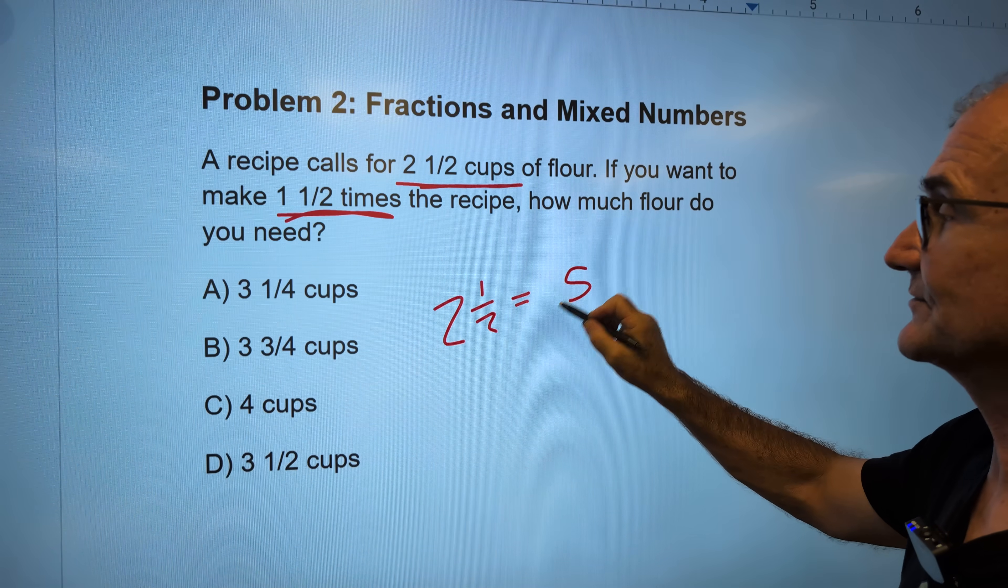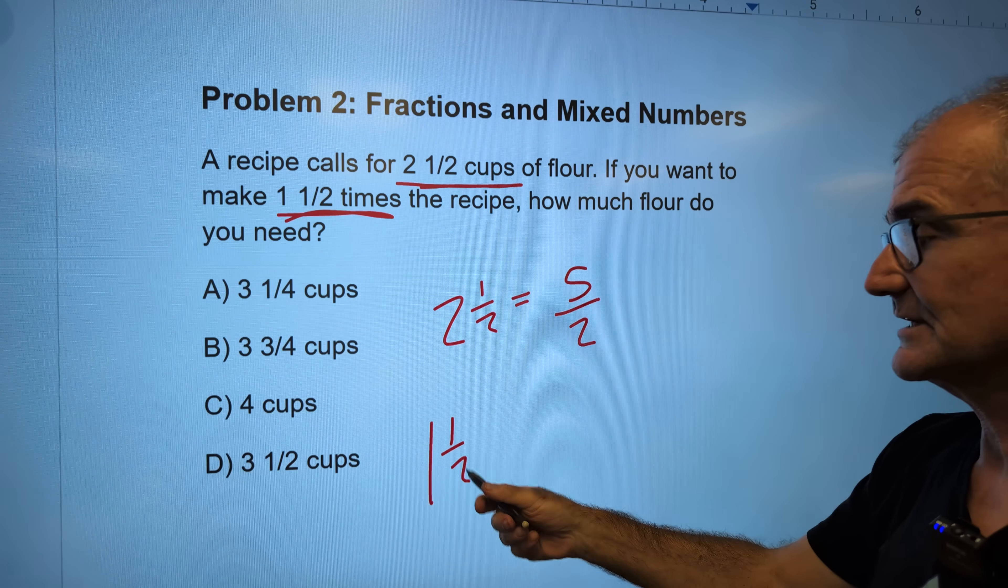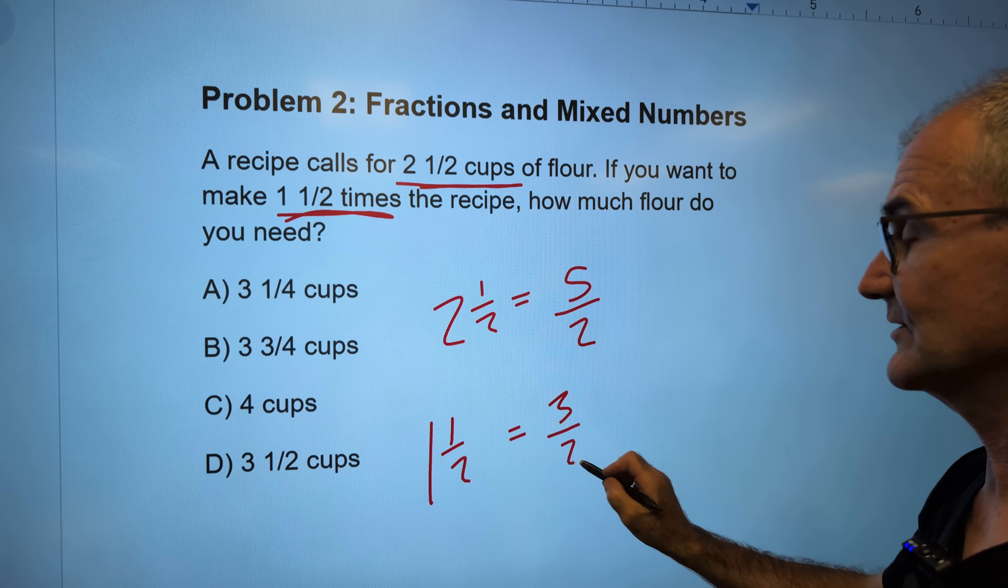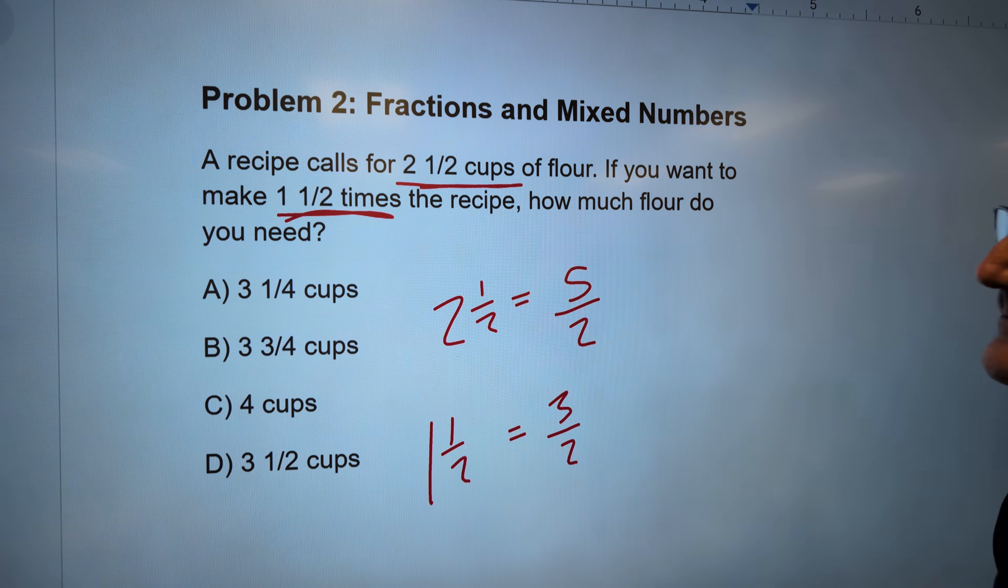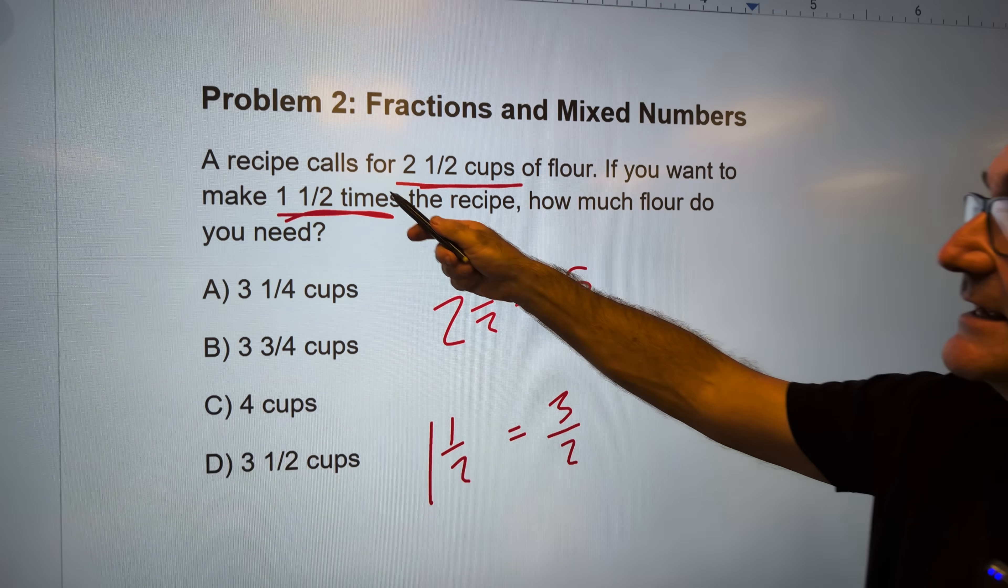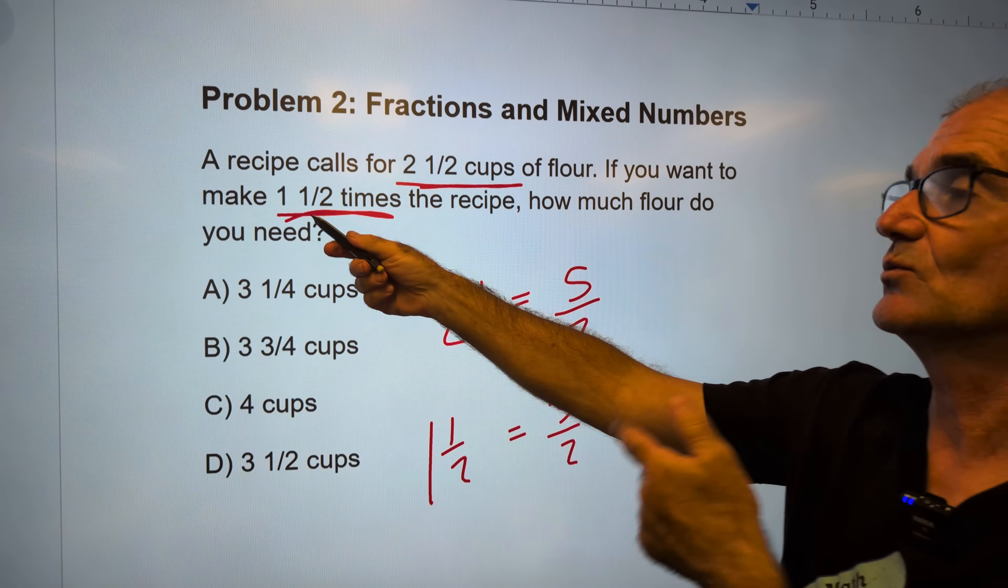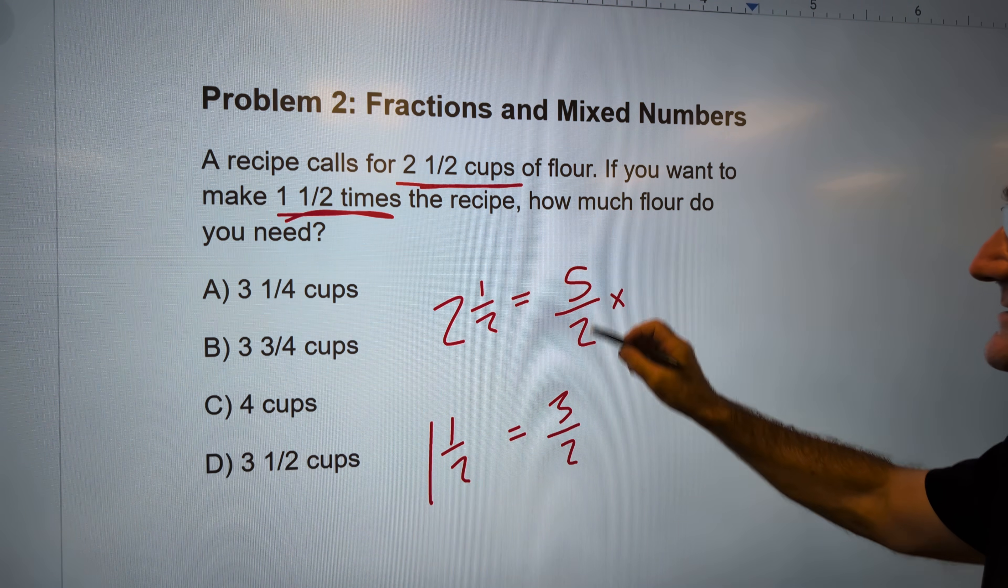So 2×2=4 plus 1 is 5. So 2½ is 5/2. 1½: 1×2=2 plus 1 is 3, so that's 3/2. So I've taken these mixed numbers, turned them into improper fractions. And then the next step is saying I have this much per serving and I need to make 1½ times that. So I have to multiply these two fractions together.